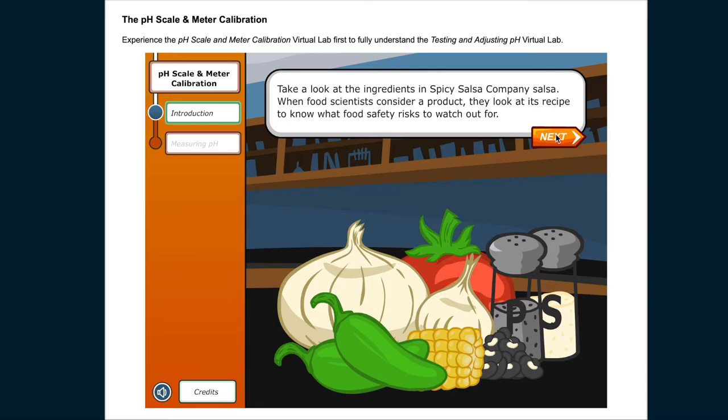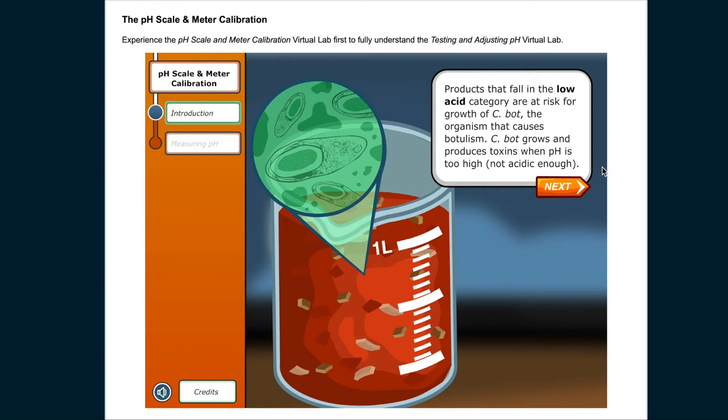Take a look at the ingredients in Spicy Salsa Company salsa. When food scientists consider a product, they look at its recipe to know what food safety risks to watch out for. Products that fall in the low acid category are at risk for C. bot, the organism that causes botulism.